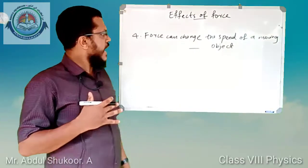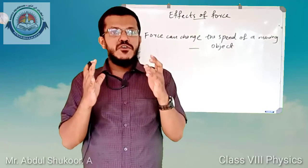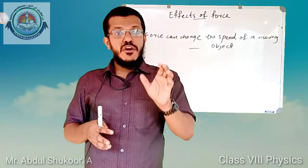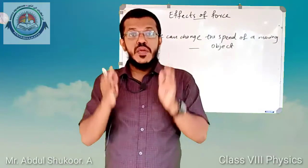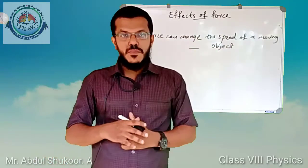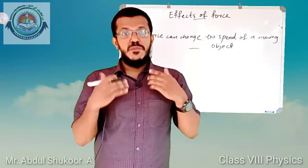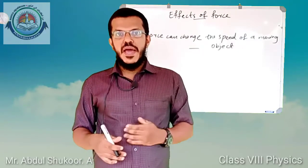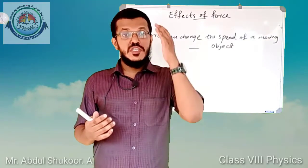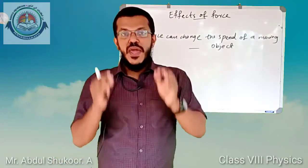The fourth effect of force: force can change the speed of a moving object. For example, if you apply a force on a swing, the speed of the swing increases. If you apply a force in the opposite direction on a moving swing, the speed slows down. Similarly, applying more force on the pedal of a cycle increases its speed, while applying brakes in the opposite direction of motion slows it down.